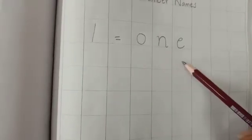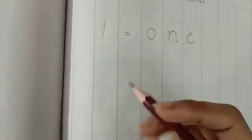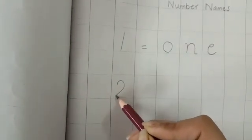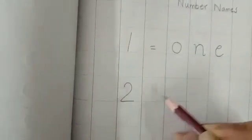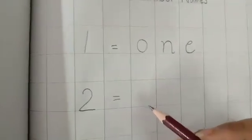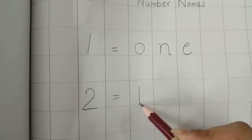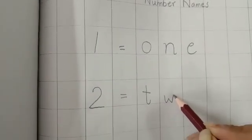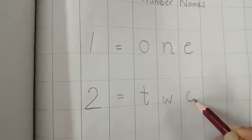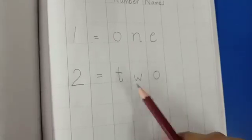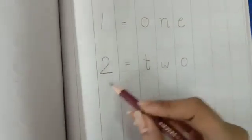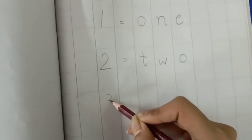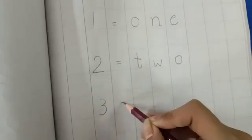Then you will leave this line. And over here, you will write 2 equals to T-W-O-2.